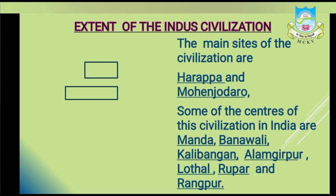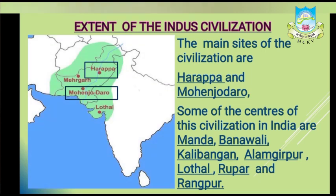This indicates that Harappan culture covered a large area including Sindh, Baluchistan, Punjab, Haryana, Rajasthan, and Gujarat. We can say that this civilization extended from Afghanistan in the north to Maharashtra in the south, and from the border of Iran and Pakistan in the west to Uttar Pradesh in the east. It is said that the Indus Valley civilization was the largest river valley civilization of the ancient world.